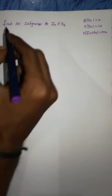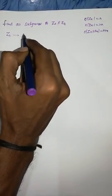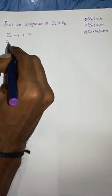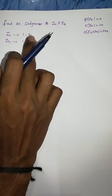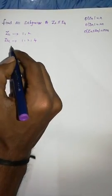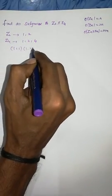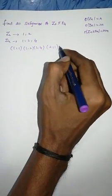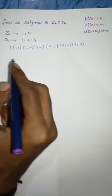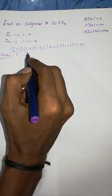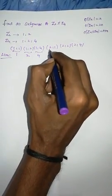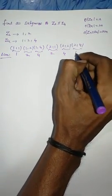I am going to follow the same technique used to find the order of an element for Zn cross Zm. First, I write the divisors of 2 — which are 1, 2 — and the divisors of 4 — which are 1, 2, 4. Then I make ordered pairs: (1,1), (1,2), (1,4), (2,1), (2,2), (2,4). Taking the LCM of each pair gives LCMs of 1, 2, 4, 2, 2, 4.